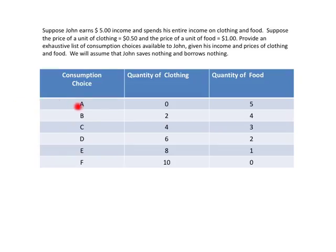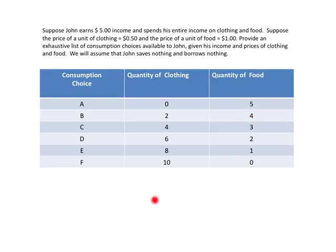At consumption choice A, John decides to spend no money on clothing, so the maximum amount of food he can buy at one dollar per unit is five units. At choice B, John buys two units of clothing, spending one dollar, leaving four dollars. Since the price of food is one dollar, he can buy four units of food. In this way we construct the full table of consumption choices under the new financial situation.